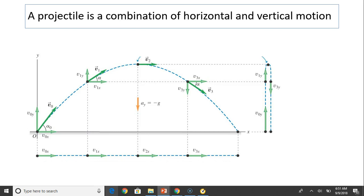A projectile is a combination of horizontal and vertical motion. In the horizontal direction, the acceleration is zero. So for each equal time interval the projectile travels equal distance.